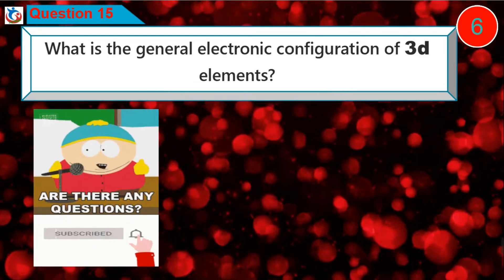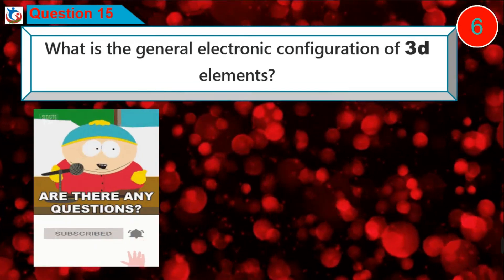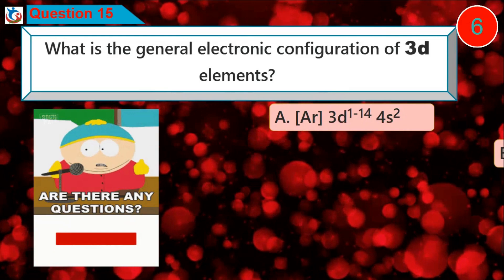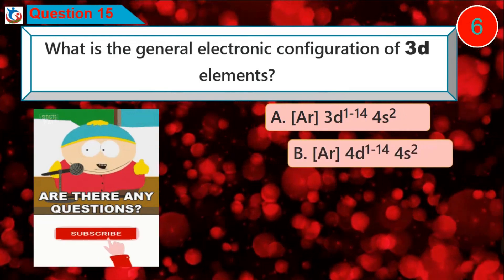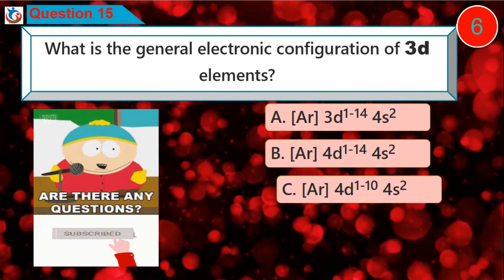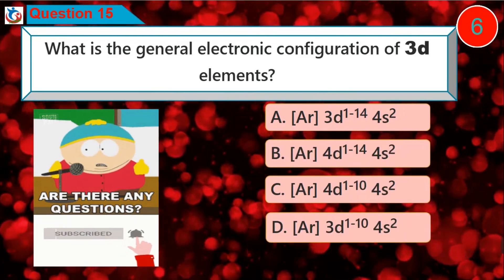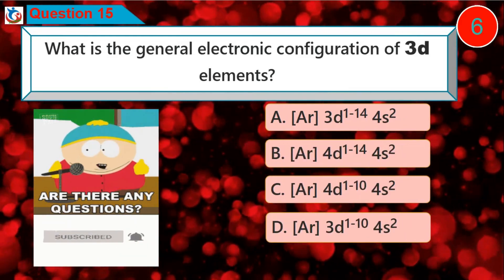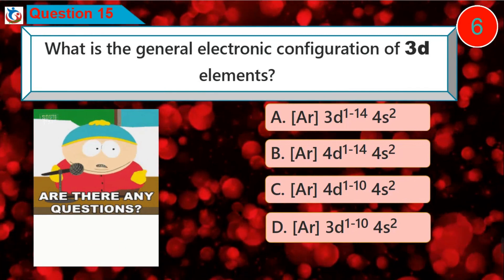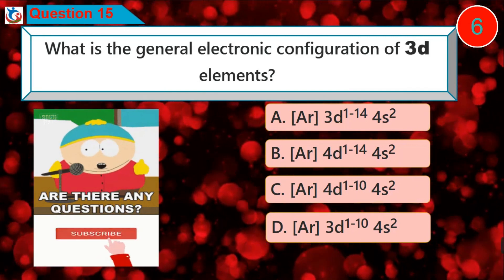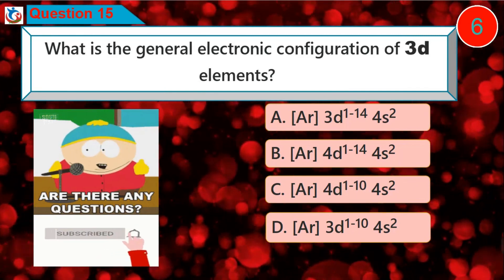Question 15: What is the general electronic configuration of 3d elements? Is it option A, B, C, or D?